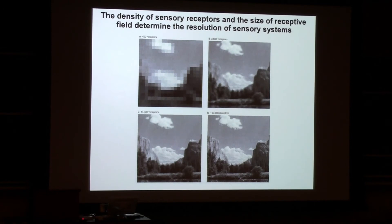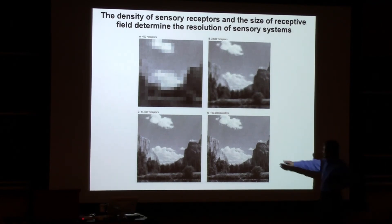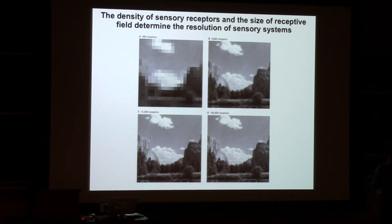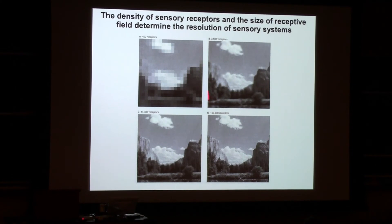The size and density of receptive fields matters for how well we can sense the external world. This example shows that humans have a lot of receptive fields in the visual system, each small. If we simulate the view with fewer, larger receptive fields, the image becomes blurry and low resolution — roughly what a rodent like a mouse would see at Yosemite, because the mouse visual system has large, sparse receptive fields.